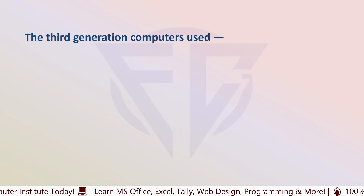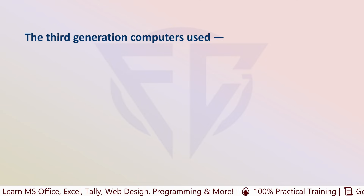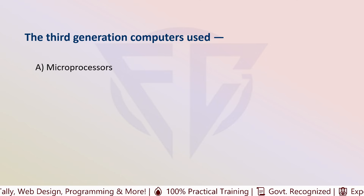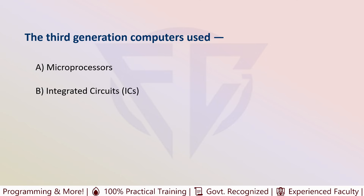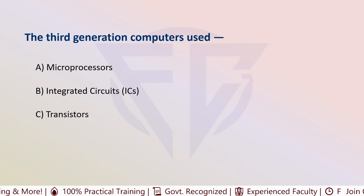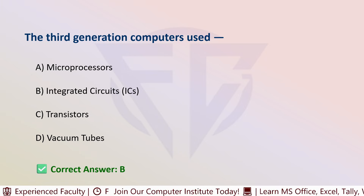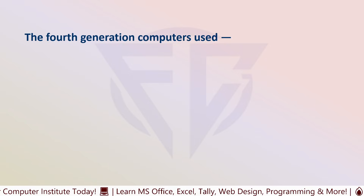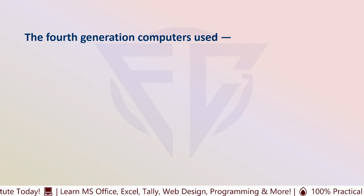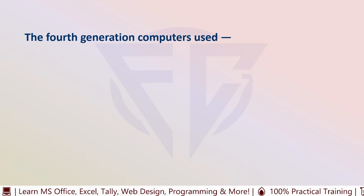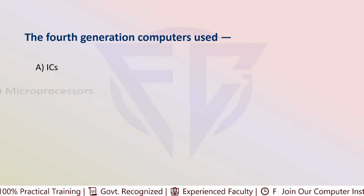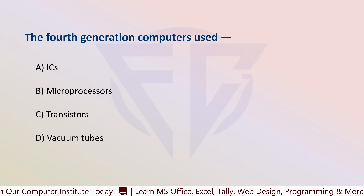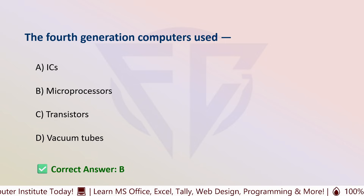The next question is: the third generation computers used — options include microprocessor and integrated circuits. The correct answer is B, that is integrated circuits. The next question: the fourth generation computers used — options are: A) ICs, B) Microprocessor, C) Transistor, and D) Vacuum tube. The correct answer is B, that is microprocessor.